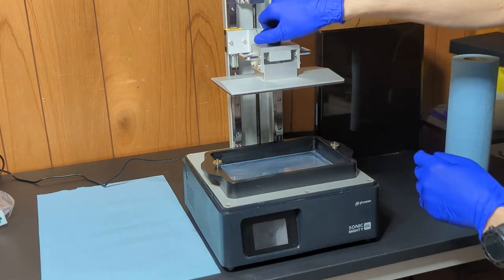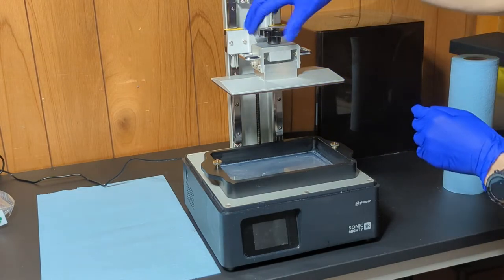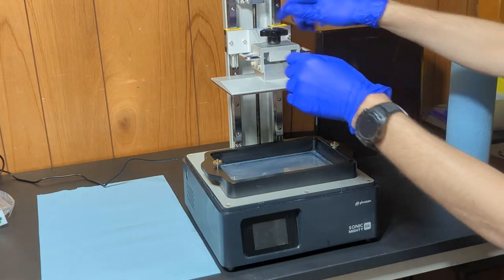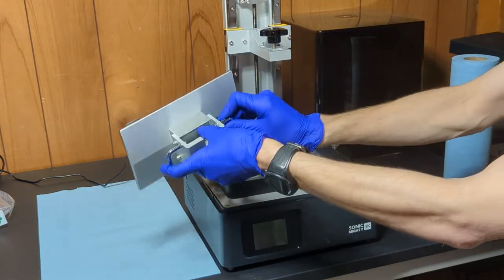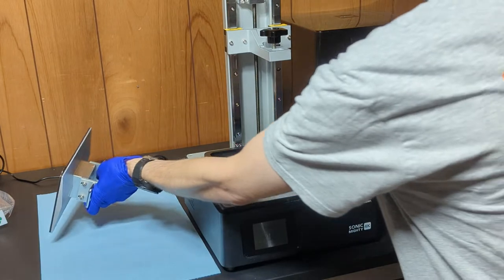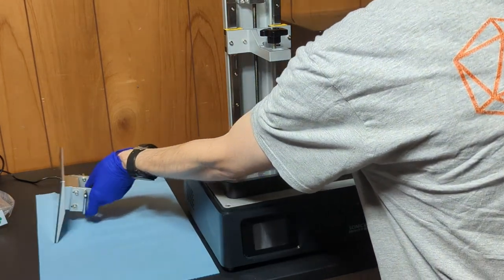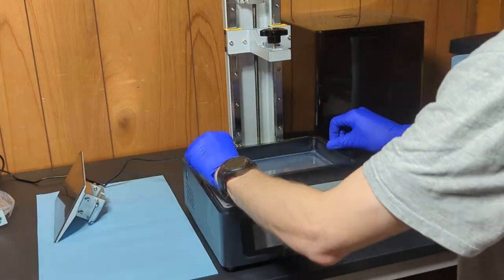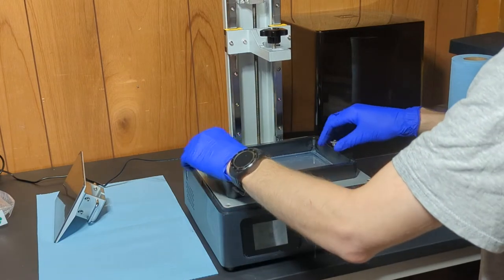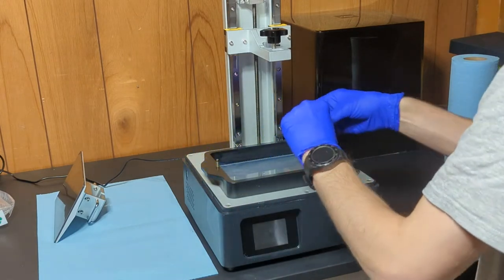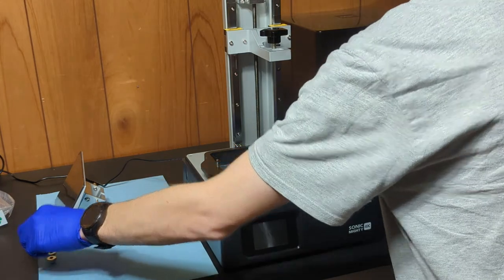Typically you'll want to replace your screen after about 2,000 hours of use, or if it is damaged for any reason. You also want to replace your film any time that it has scratches or dents in it from pieces of resin that didn't quite get cleaned out from previous prints, and that also can cause damage to your screen.